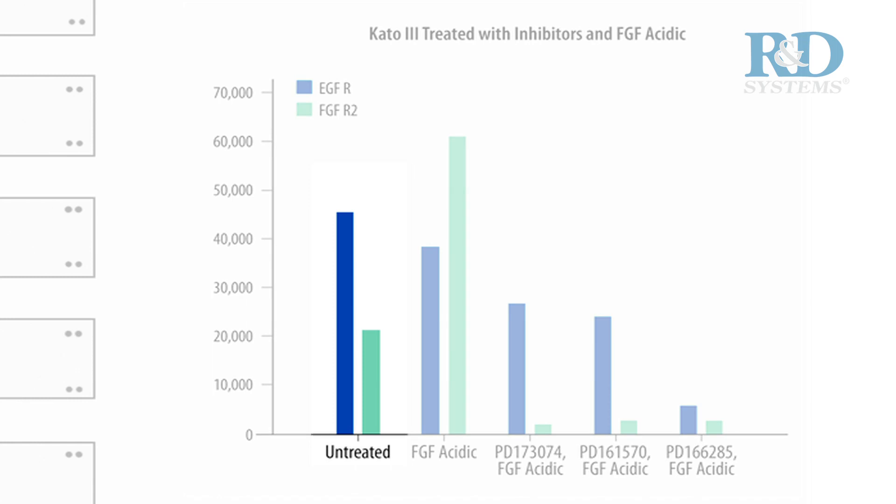In this set of experiments, Kato3 cells were untreated, treated with recombinant FGF acidic and heparin, or pre-treated with FGFR selective inhibitors prior to treatment with recombinant FGF acidic and heparin.